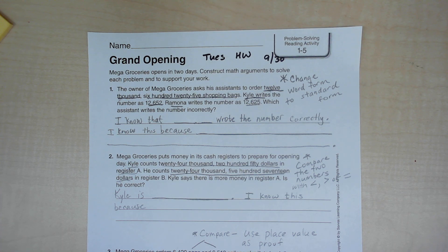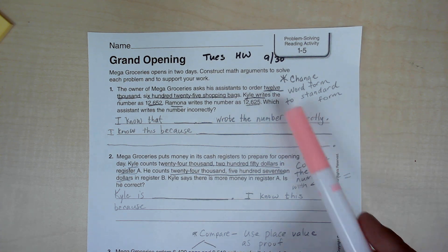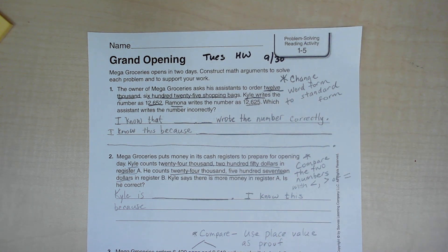Number one: The owner of Mega Groceries asks his assistants to order 12,625 shopping bags. Kyle writes the number as 12,652. Ramona writes the number as 12,625.